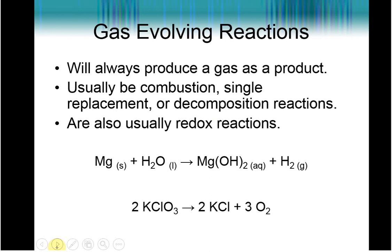Gas evolving reactions are always going to produce gas as a product. They can be combustion reactions, single replacement reactions, decomposition reactions, and they're also usually going to be classified as redox. Here you have hydrogen by itself being produced. It's going to have a redox number of 0. So this is a single replacement reaction that is also redox and gas evolving. And here we have a decomposition reaction where, again, it goes from minus 2 to 0 for oxygen. So you again have a decomposition reaction that is going to be a gas evolving reaction and a redox equation.